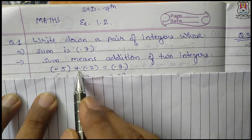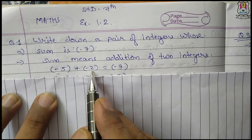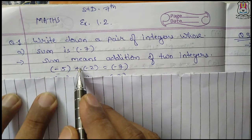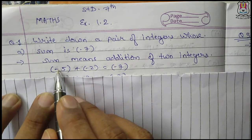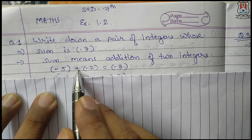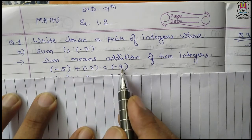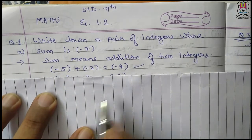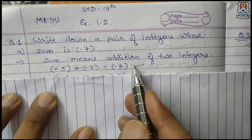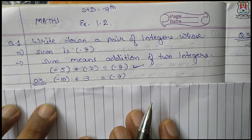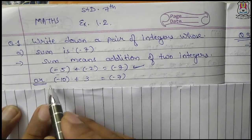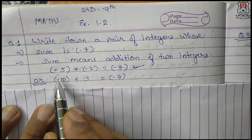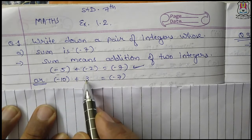Minus 5 plus minus 2: plus minus will be minus, and then the values are added. So, minus 5 plus minus 2 is equal to minus 7. This is the first way you can find the answer as minus 7.